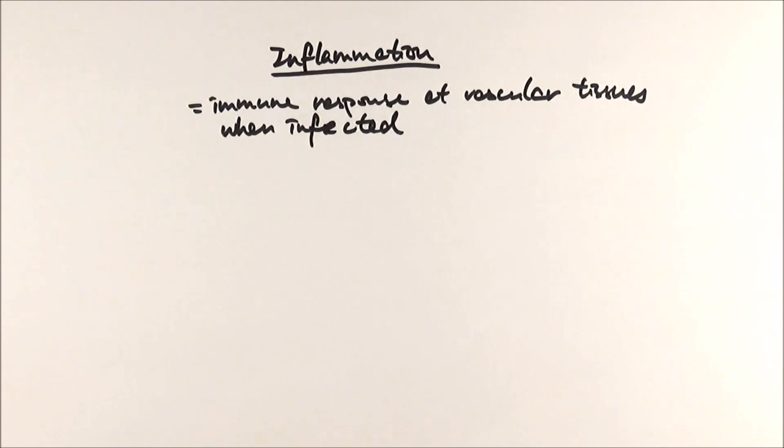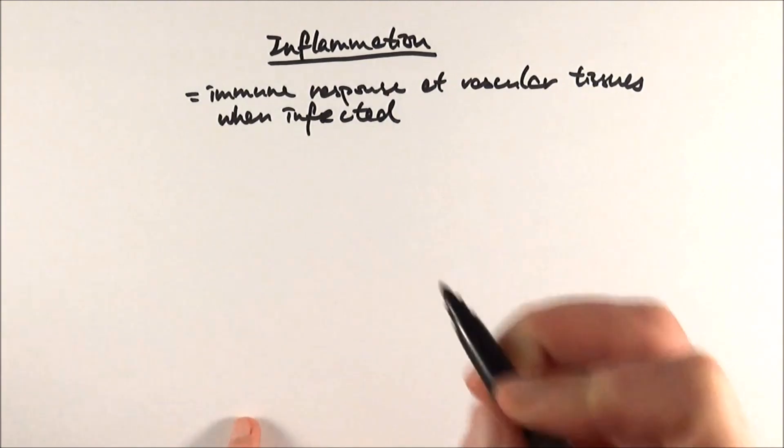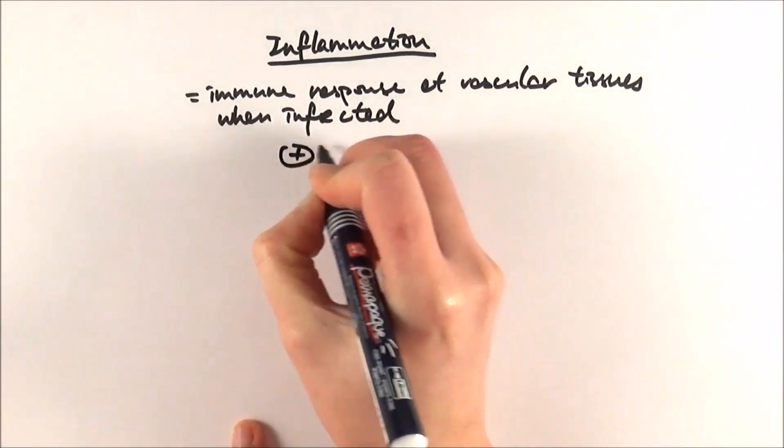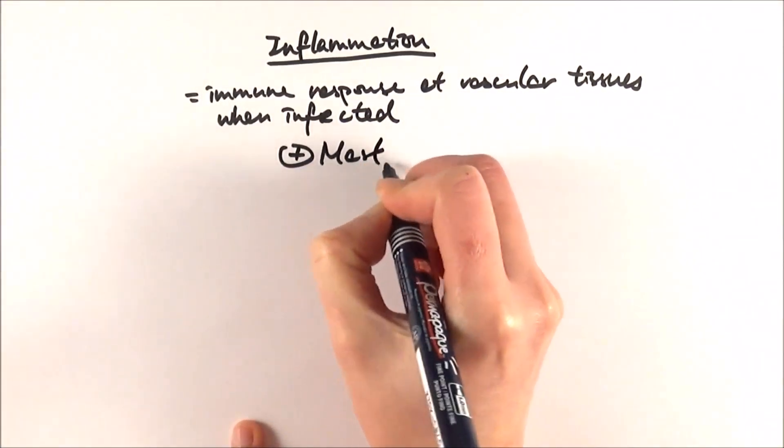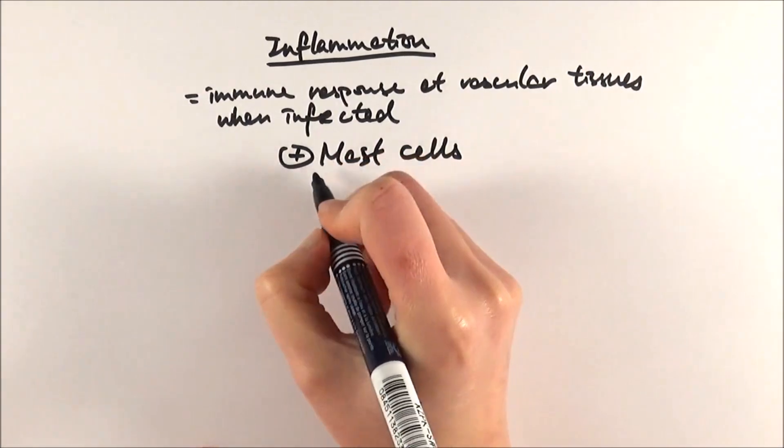Inflammation is the immune response at vascular tissues when it gets infected. It's quite obvious when you have inflammation because there will be some rather obvious symptoms. During inflammation, they activate something called mast cells. These mast cells produce two different chemicals which bring about different effects.